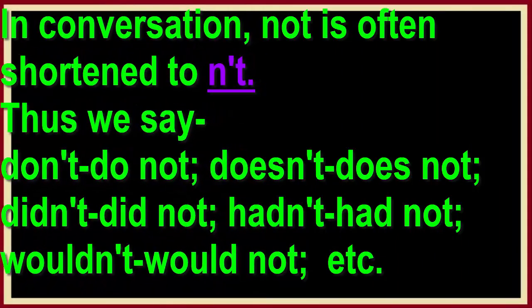In conversation, not is often shortened to an apostrophe contraction. Thus we say don't for do not, doesn't for does not, didn't for did not, hadn't for had not, wouldn't for would not, etc.